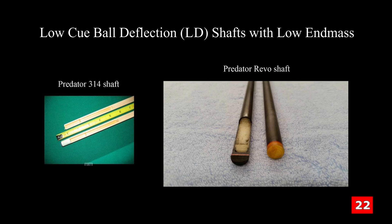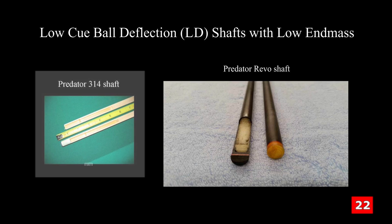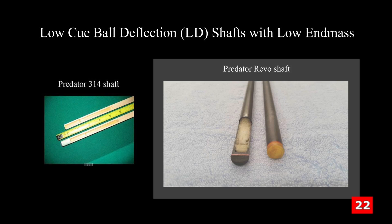From these cross-sections through popular low cue ball deflection shafts, it is clear that the main factor reducing cue ball deflection is making the end of the shaft very light, either by drilling out the core or by using hollow or foam-filled carbon fiber. Here's a physical explanation for why that works. With an off-center hit, the tip starts to rotate with the cue ball during tip contact.